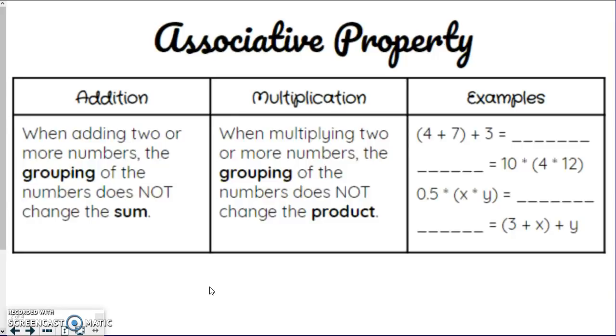When multiplying two or more numbers, the grouping of the numbers does not change the product. So basically, if you group the first pair of numbers and then add in that third one, you'll get the same answers as if you group the other pair and added them. And we use this a lot when we do mental math.